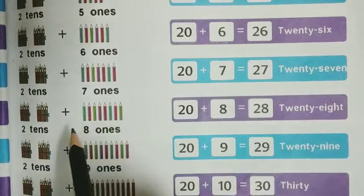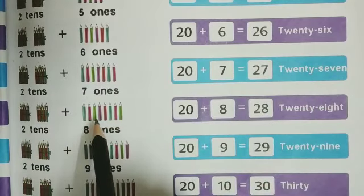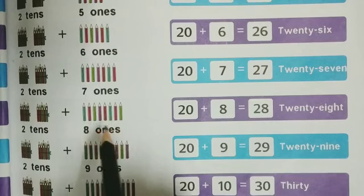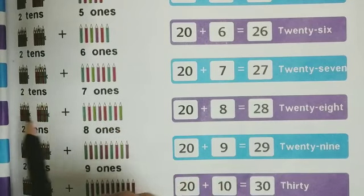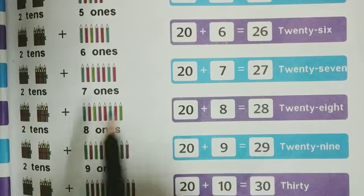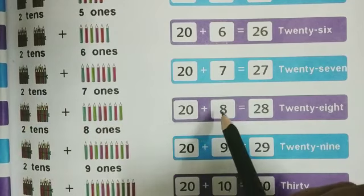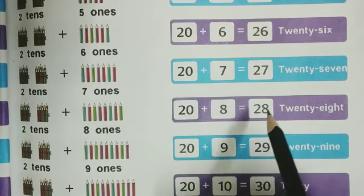We will move further: one, two, three, four, five, six, seven, eight — 8 ones means 8 objects — plus 2 tens means 20 objects. Here we will add 20 plus 8 equals to 28.